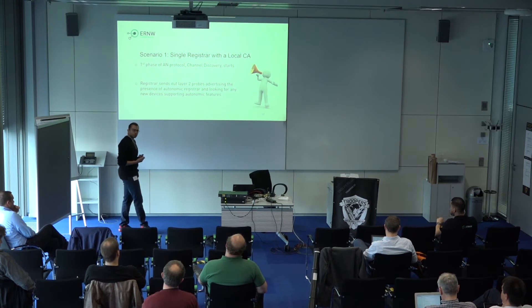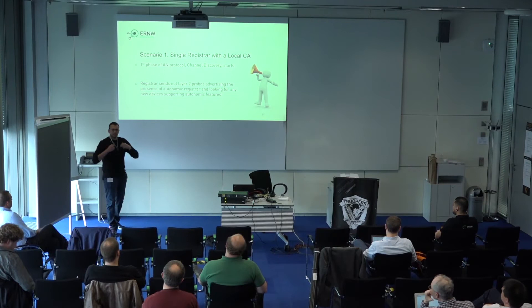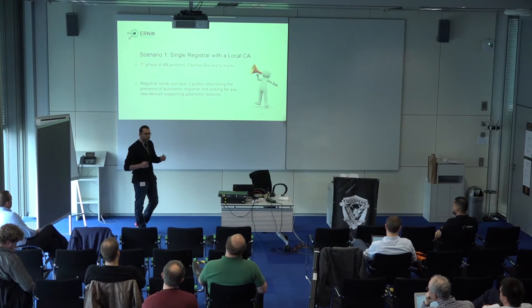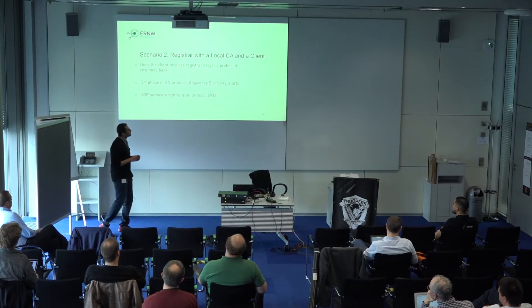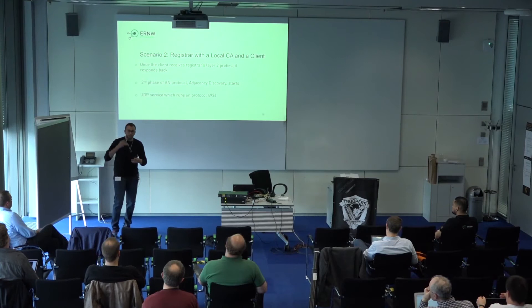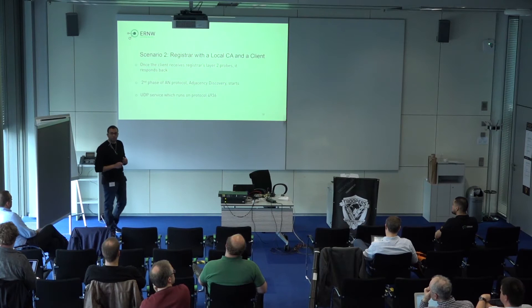After the registrar completes setup, it starts Phase 1 of the Autonomic Protocol — channel discovery. The registrar sends Layer 2 probes saying it's searching for any device capable of Autonomic Network. Once a client hears these probes and answers, we start Phase 2 of the Autonomic Protocol — adjacency discovery — which is a UDP service running on port 4936.